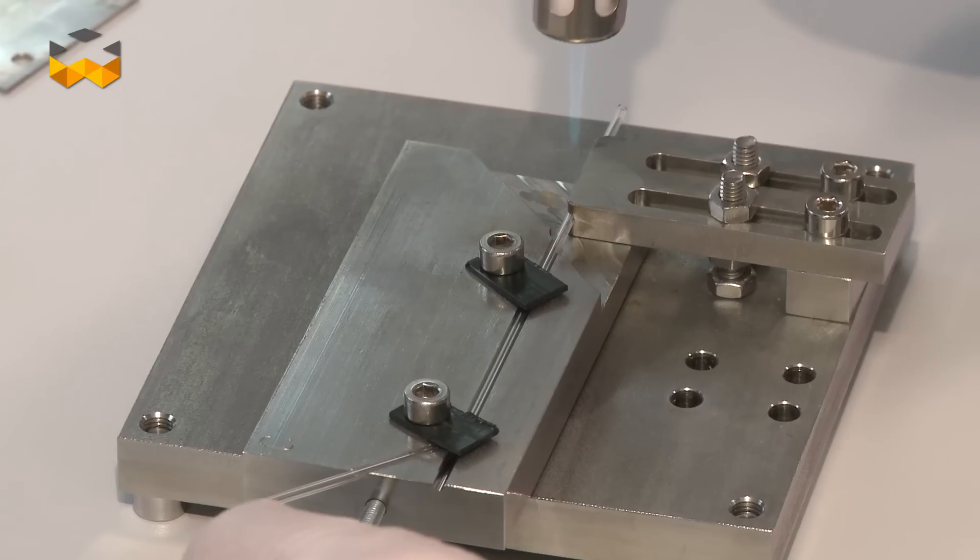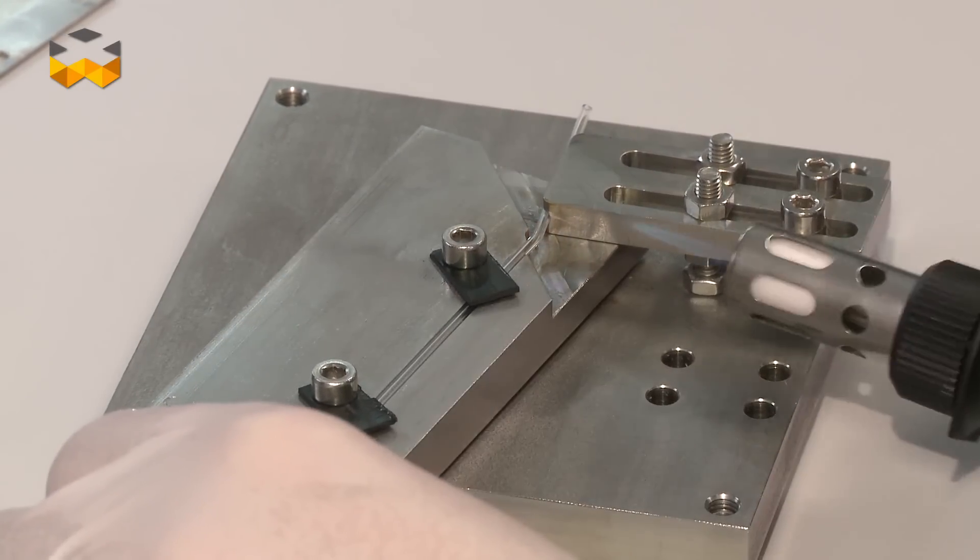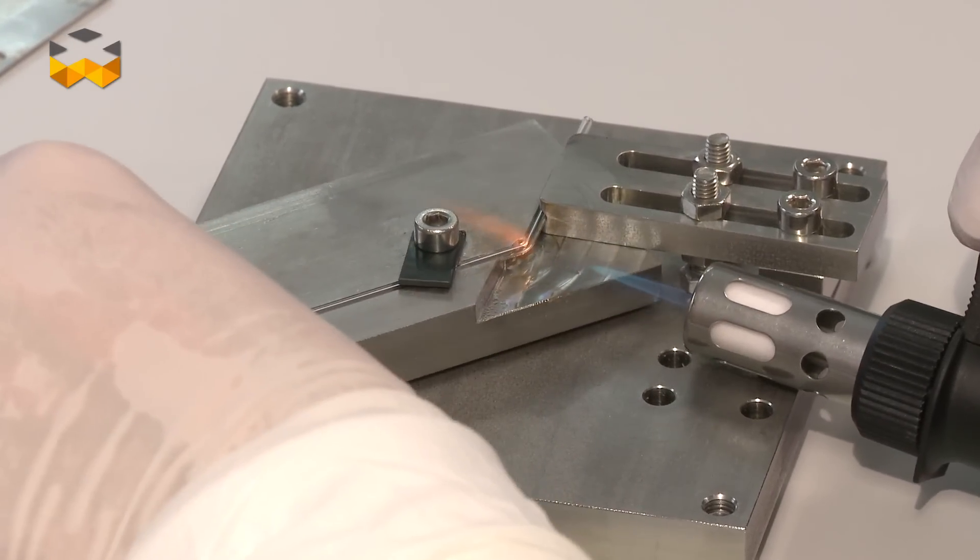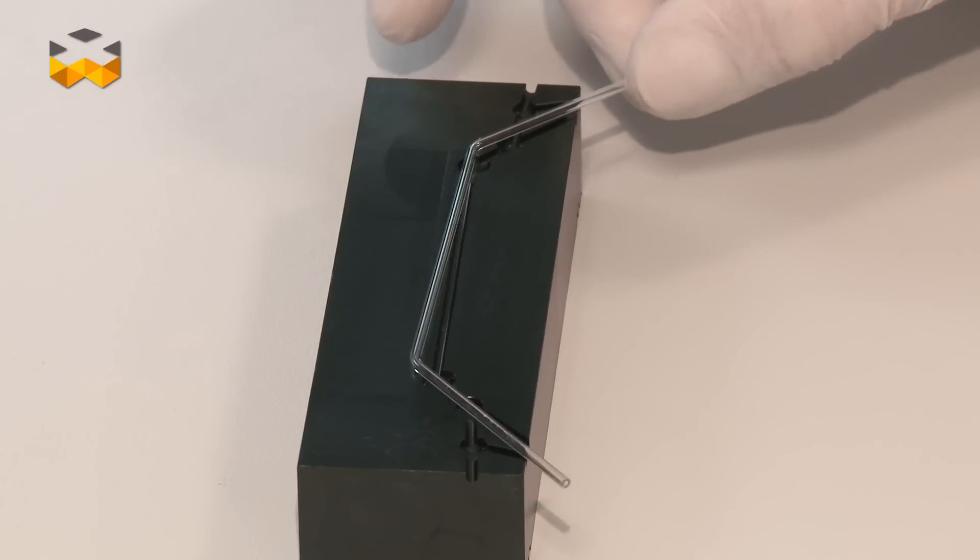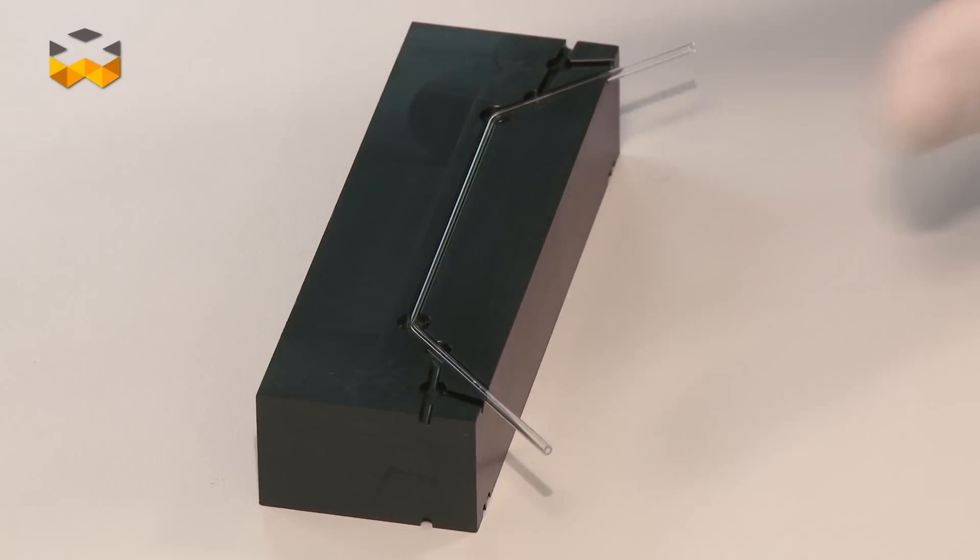It has to be very, very precise, because we work with microns. The glass is an amorphous material, but it has some elasticity.